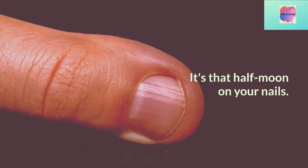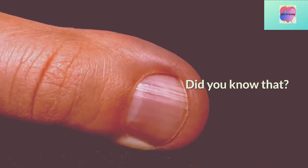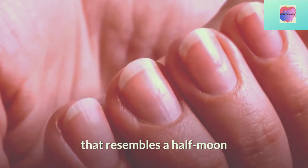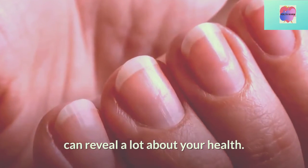What a lunula is? It's that half-moon on your nails. Did you know that? That's right, that internal and whitish part of your nail that resembles a half-moon can reveal a lot about your health.